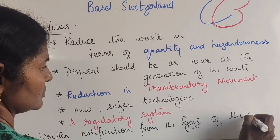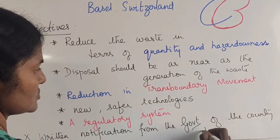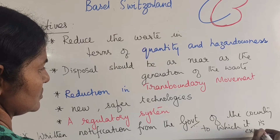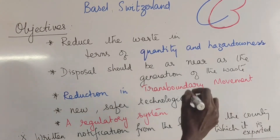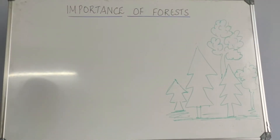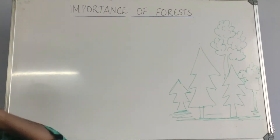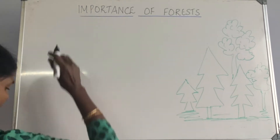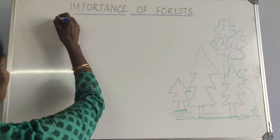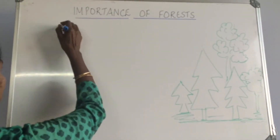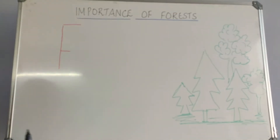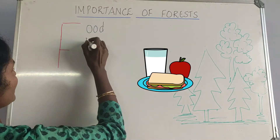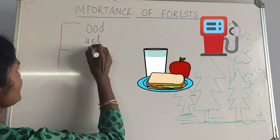That brings us to an end of the Basel Convention. Now we move on to another important topic — the importance of forests. The forest starts with the letter F: it provides food, fuel, fiber, and fertilizer.